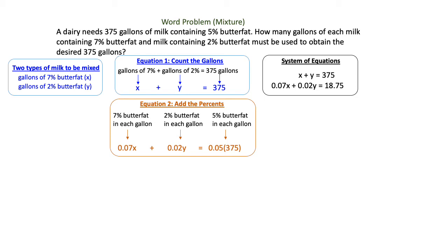0.07x represents the 7% of however many gallons that is. The 0.02 is 2% of however many gallons. And the 18.75 is a multiplication of the 0.05 times 375. So now we're going to take that second equation and fix the decimals by simply multiplying the entire equation by 100 and moving the decimals to the right twice in each of those terms. That'll give us 7x plus 2y equals 1875.